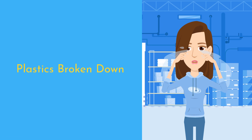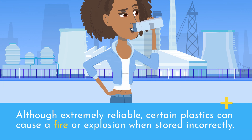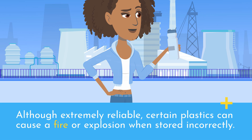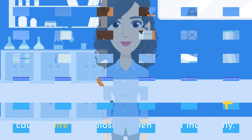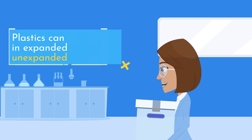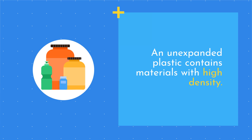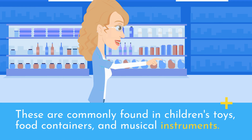Plastics Broken Down: Many warehouses specifically utilize plastic materials to meet their business needs. Although extremely reliable, certain plastics can cause a fire or explosion when stored incorrectly. Each plastic encompasses a group classification ranging from A to C, displaying different hazardous levels that could potentially become combustible. Unexpanded plastic contains materials with high density and is commonly found in children's toys, food containers, and musical instruments.